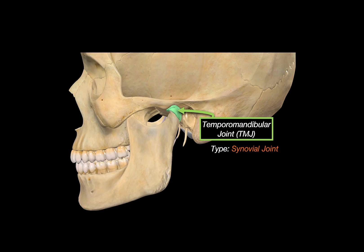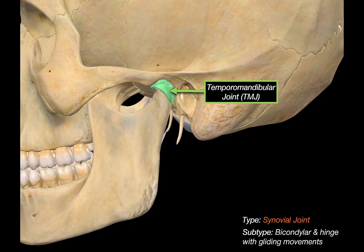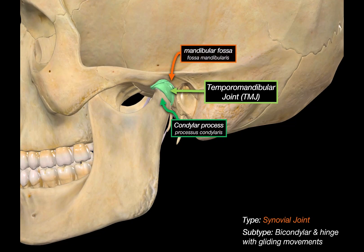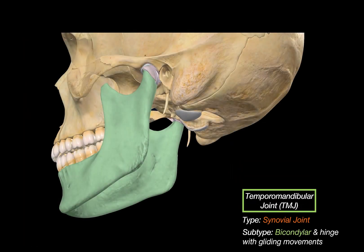But it's a little bit more special. The temporomandibular joints are bicondylar, hinged-type joints with gliding movements. The TMJ is a connection between the condylar process of the mandible and the mandibular fossa of the temporal bone. The term bicondylar means it's made up of two condylar processes, so the left and right TMJs work together — they move simultaneously and don't function independently.